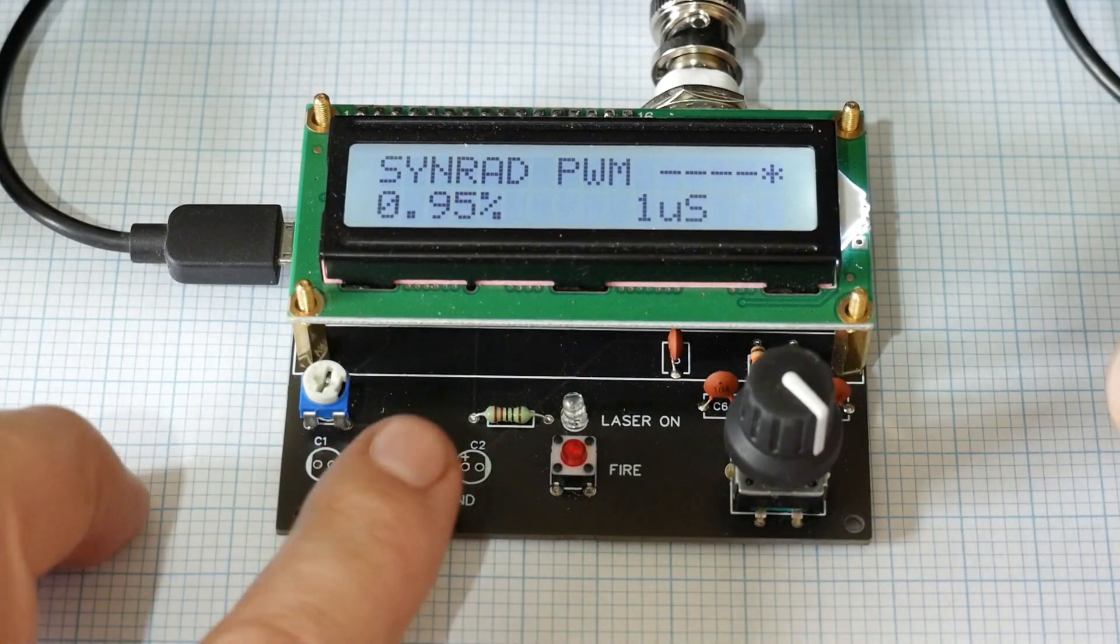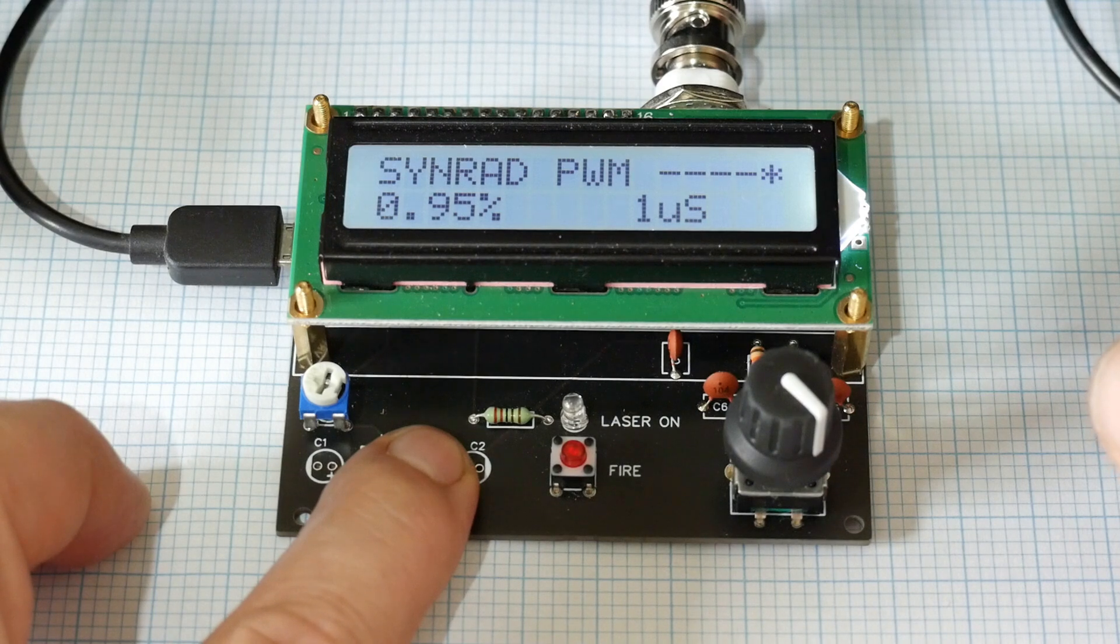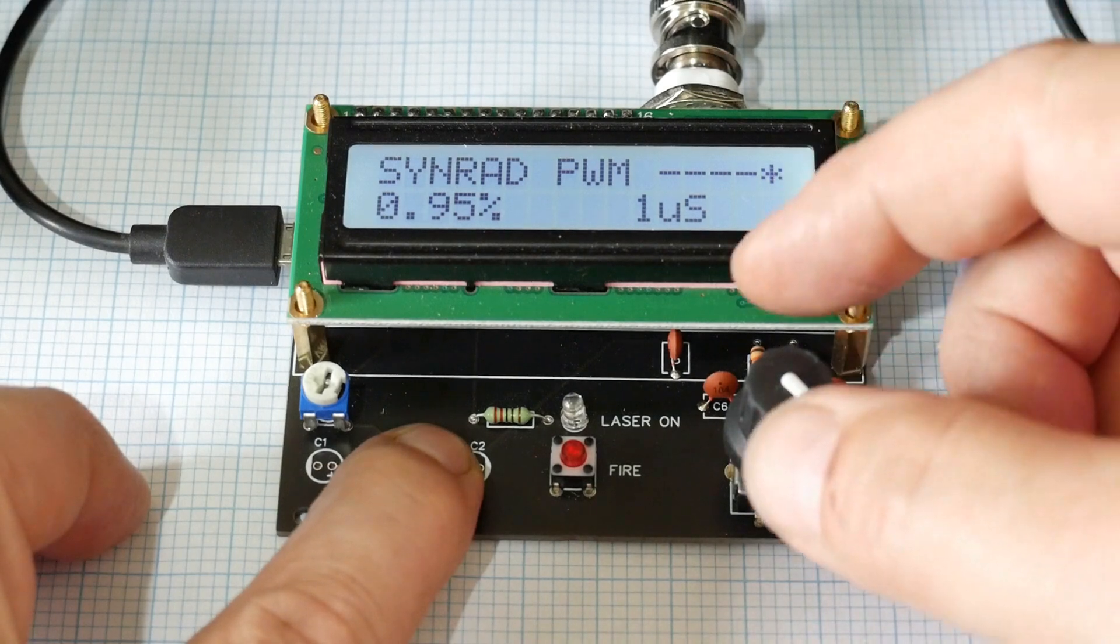To control the laser I am using a homemade controller. Real Synrad controllers show up on eBay from time to time but they are always at ridiculous prices, so I have decided to roll my own. The controller provides the main functions of a proper Synrad controller including the 5kHz tickle pulse and PWM power level control.